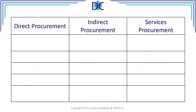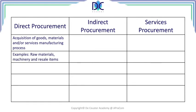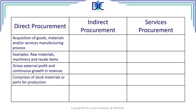In direct procurement, we are considering the acquisition of goods, materials, and/or services for the manufacturing process. Examples are raw materials, machinery, and resale items. Direct procurement drives external profit and continuous growth in revenue. It also comprises stock materials or parts for production.